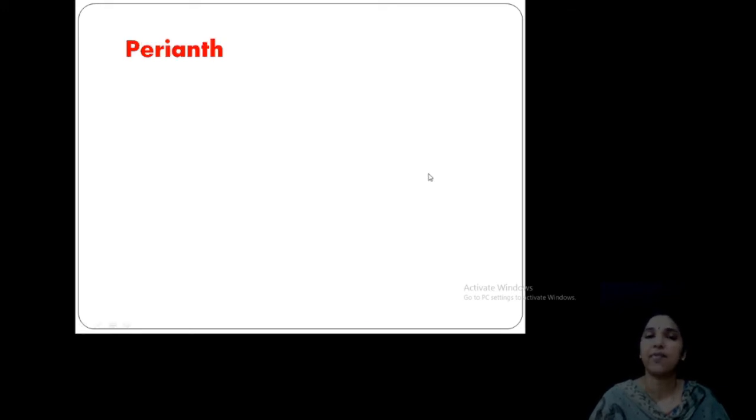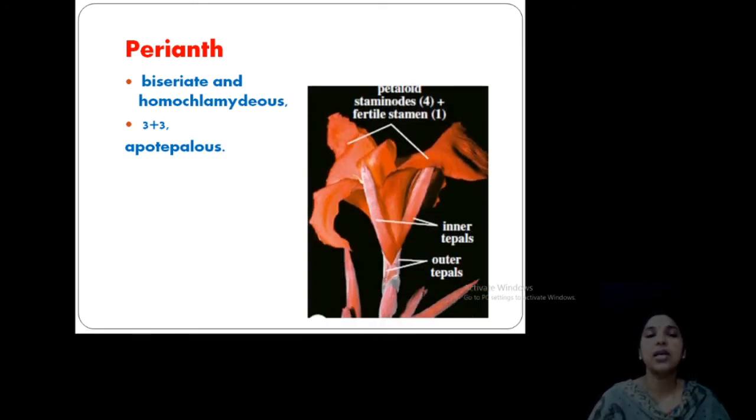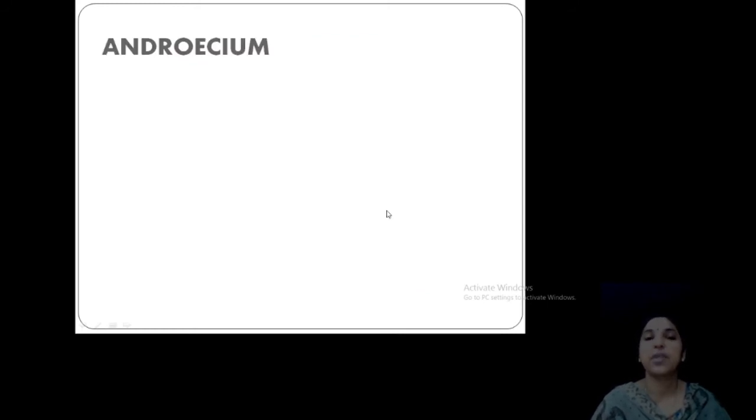Now, looking into the perianth, usually biseriate and homochlamydeous, same color, that is 3 plus 3 arrangement. These are the outer tepals and these are the inner tepals. Don't confuse the colored portion as our perianth. Just below this colored petal-like structure you can see two important parts: one is the outer tepal three and this is the inner tepal three. Just take a canna flower and look into detail.